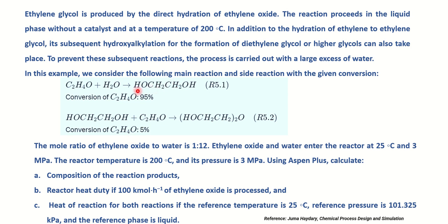Simultaneously, a side reaction also takes place where ethylene glycol reacts with ethylene oxide to produce diethylene glycol. The temperature of the reactor is 200°C and the pressure is 3 MPa inside the reactor. The mole ratio of ethylene oxide to water is 1 to 12.